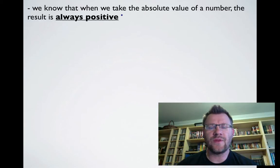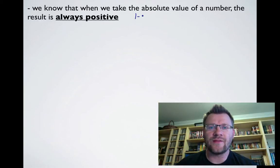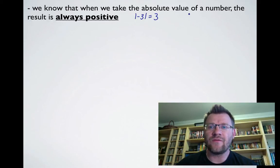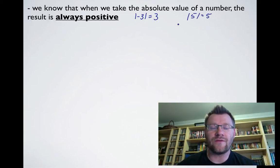We know that when we take the absolute value of a number, the result is always positive. For example, the absolute value of negative three is equal to three. Even if you took the absolute value of five, that was just equal to a regular five.